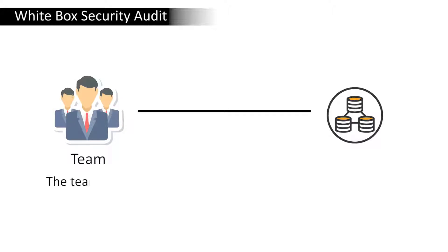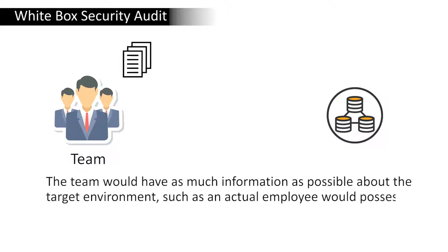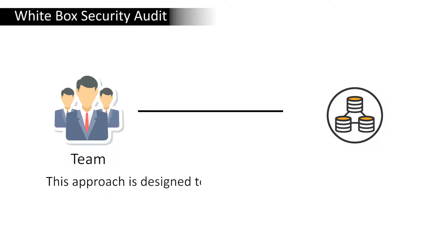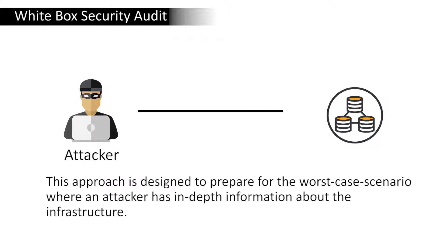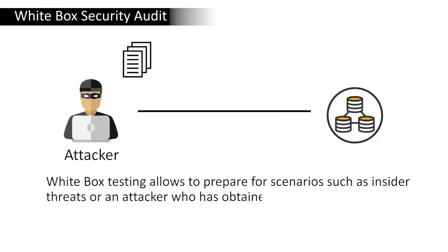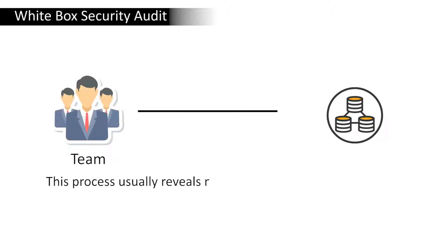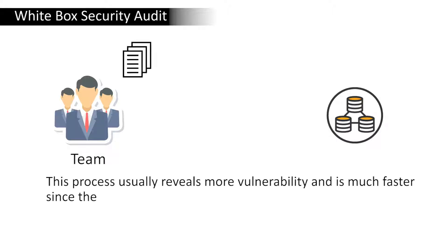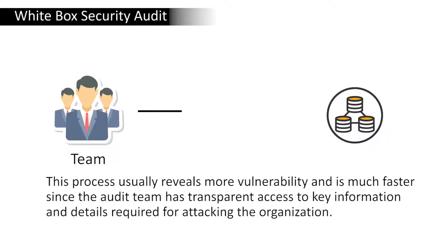In the white box security audit approach, the team would have as much information as possible about the target environment, such as what an actual employee would possess. This approach is designed to prepare for the worst-case scenario where an attacker has in-depth information about the infrastructure, including insider threats. This process reveals more vulnerabilities and is much faster since the audit team has transparent access to key information.